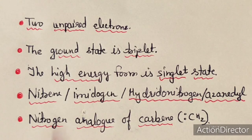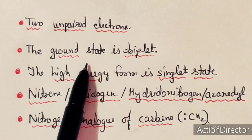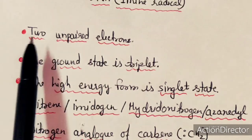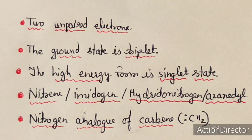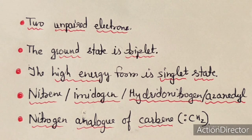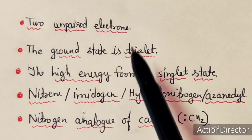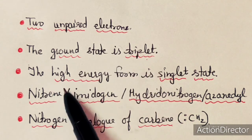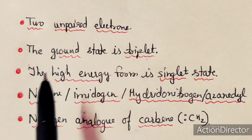The imine free radical has two unpaired electrons and its ground state is generally triplet. Because it has two unpaired electrons, the spin will become one. One electron will have half spin and the other will also have half spin, so the total spin will become one and multiplicity will become 2S+1, that is 3. So its ground state is generally triplet state and high energy forms are generally singlet states.